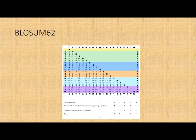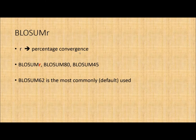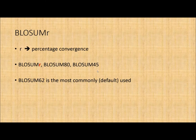So you find positive numbers, zeros, and very negative numbers in the BLOSUM matrix — that's the log-odds ratio calculation at work. BLOSUM R, where R is a percentage, means sequences in the block have no more than R% similarity. BLOSUM 80 covers high-similarity sequences; BLOSUM 45 or 30 covers divergent sequences. BLOSUM 62, used in the affine gap penalty discussion, is the most commonly used matrix.